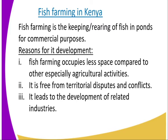Why is fish farming developed in Kenya? First reason: fish farming occupies less space compared to other agricultural activities. A pond requires a very small area in order to keep the fish. Second, it is free from territorial disputes and conflict, unlike mining where we can have territorial disputes and conflict.